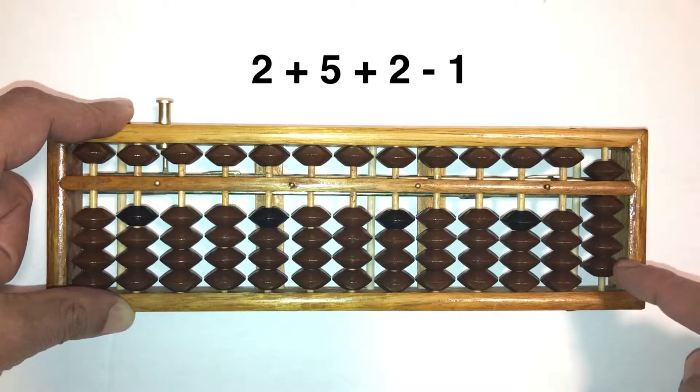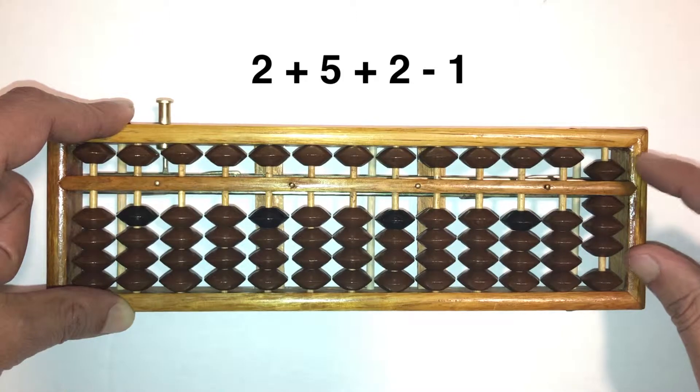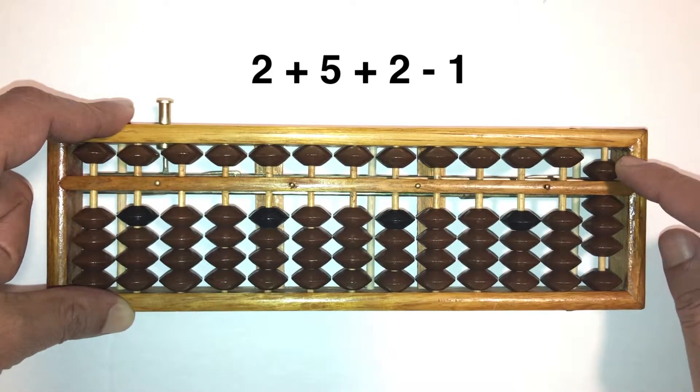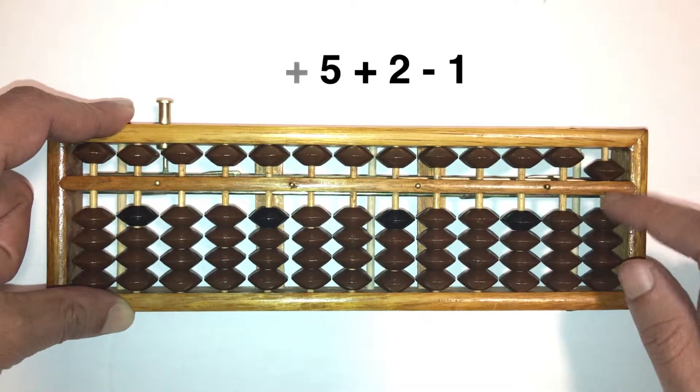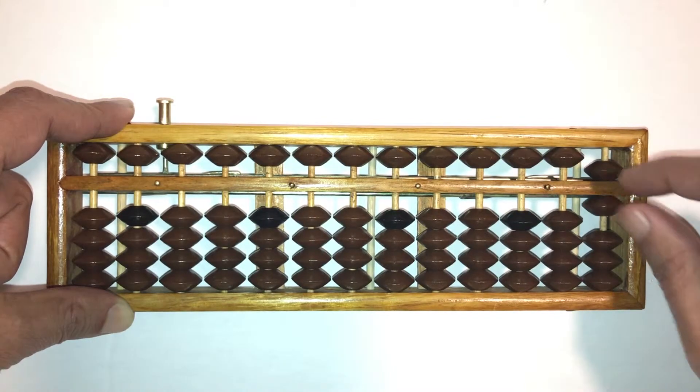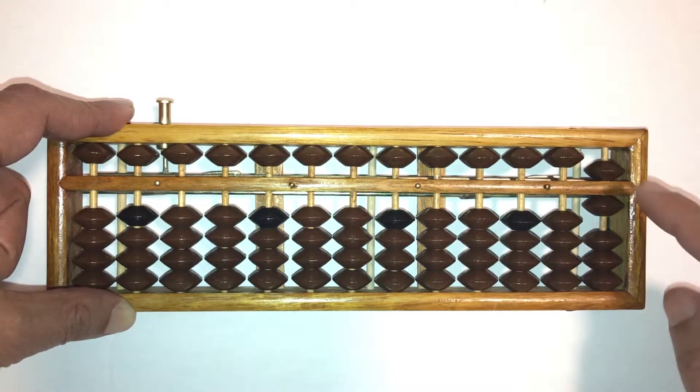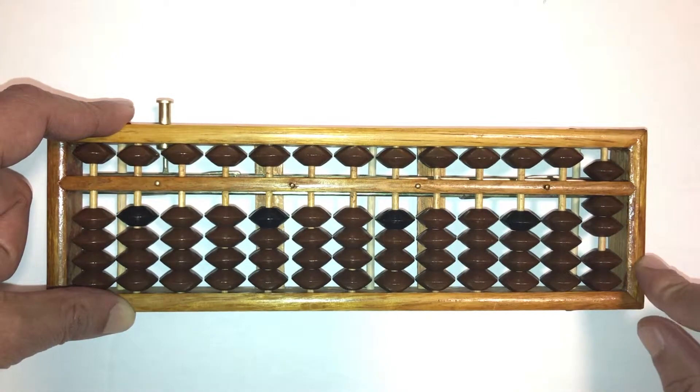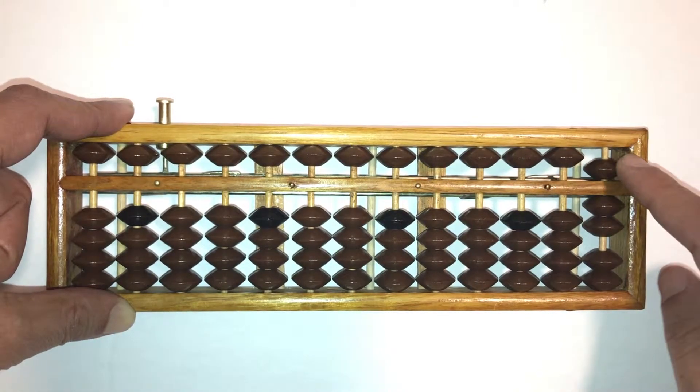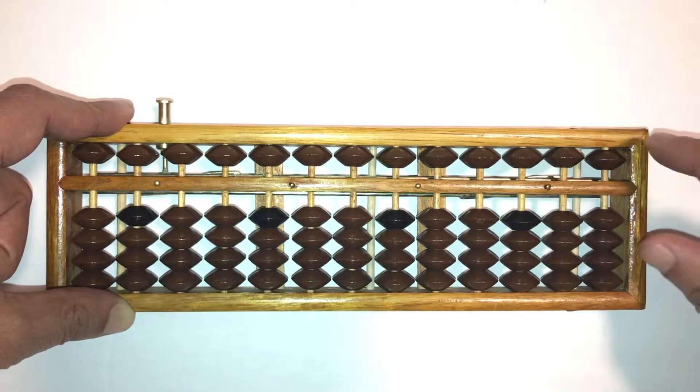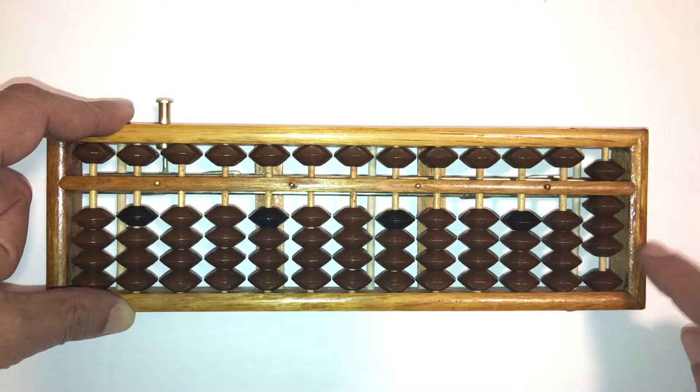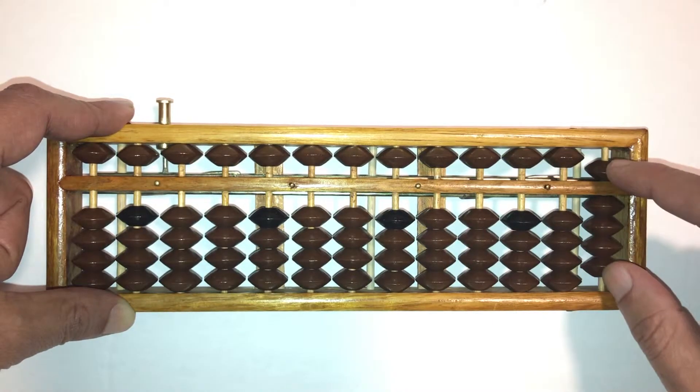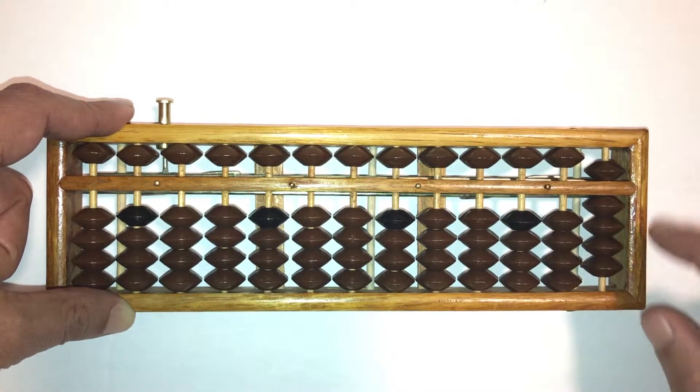Take away 1 with your pointer. The answer is 8: 5, 6, 7, 8. Now with that understanding, what do you think this number is on the abacus? This becomes 5 plus 1, which is 6. How about this? You're right, this is 7: 5, 6, 7.